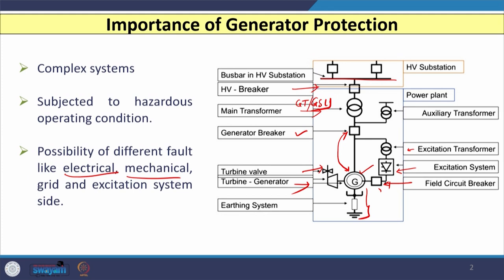Faults are also possible in the excitation system itself. We need to detect the fault if it is in the excitation system and trip the field circuit breaker if required. We also have reverse power — sometimes a situation arises where the synchronous generator becomes a synchronous motor. Instead of delivering power to the system, it takes power from the system, acting as a motor while the turbine or prime mover acts as a load. We need to detect this reverse power flow.